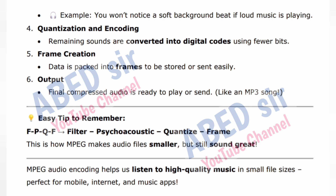Step 4 — Quantization and encoding: remaining sounds are converted into digital codes using fewer bits. Step 5 — Frame creation: data is packed into frames to be stored or sent easily. Step 6 — Output: final compressed audio is ready to play or send, like an MP3 song. Easy tip to remember: Filter, Psychoacoustic, Quantize, Frame. This is how MPEG makes audio files smaller but still sounding great — perfect for mobile, internet and music apps.